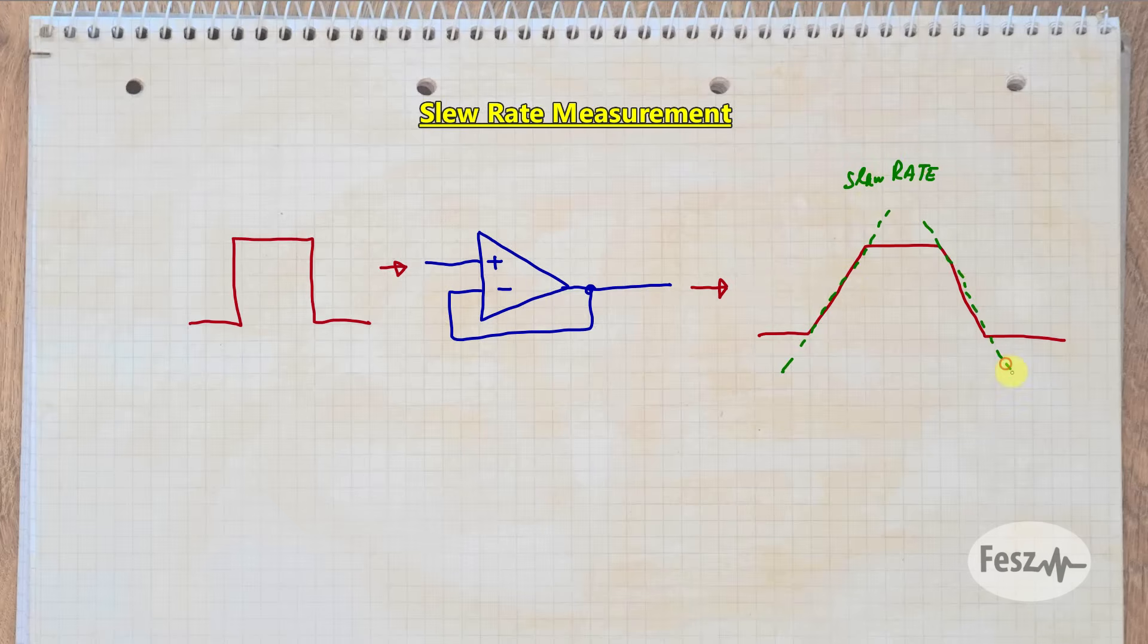And this expresses how fast the output is capable of changing. This is not related to the gain that we've set or the frequency of the signal, it's strictly an output stage limitation that every op-amp has, and it will impact any signal that we try to pass through.